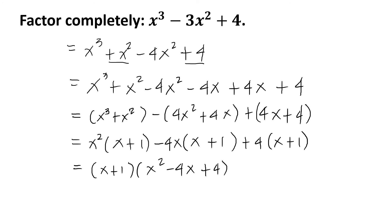Notice that the second factor resulted into a perfect square trinomial. Hence, the complete factor of x³ - 3x² + 4 is (x + 1)(x - 2)².